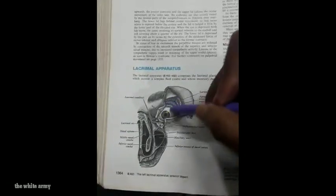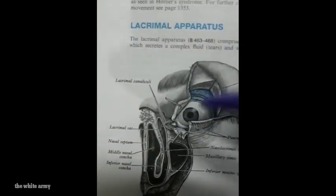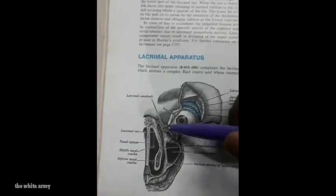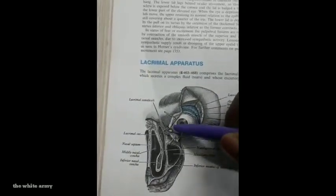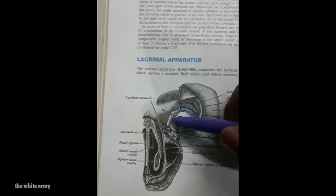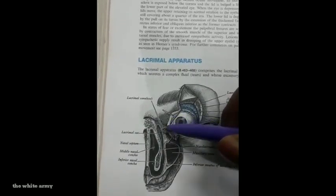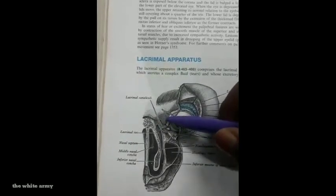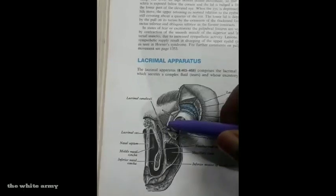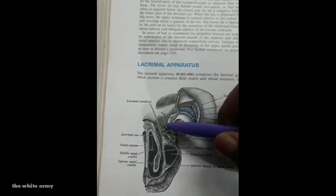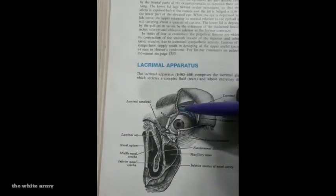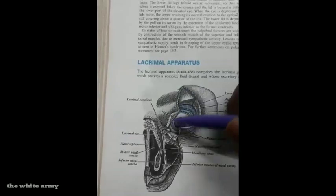Tear secretion drains via the lacrimal puncta — two small holes approximately 6 to 6.5 millimeters lateral from the medial canthus, along the junction between the ciliary and non-ciliary aspects of the eyelid. The lacrimal puncta may be associated with a protrusion known as the lacrimal papilla, which is more commonly found in the elderly.